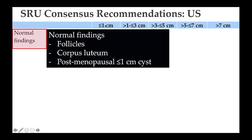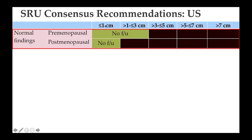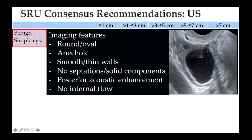In a pre-menopausal woman, anything up to three centimeters can be ignored — it's probably just a follicle or corpus luteum. In post-menopausal women, anything up to one centimeter requires no action. Anything larger than that needs to be handled further based on the guidelines.